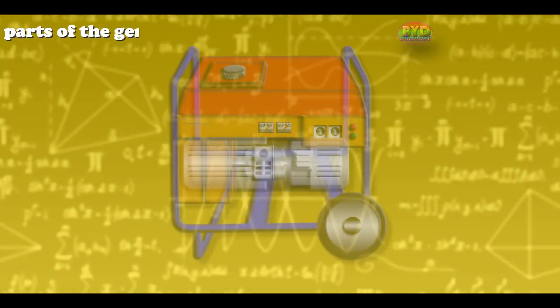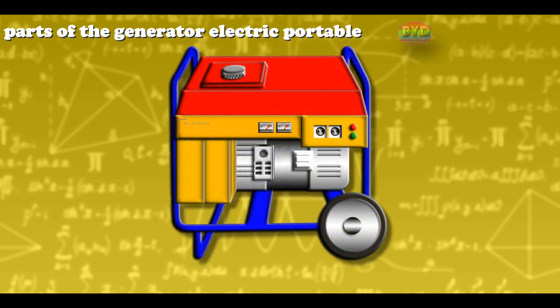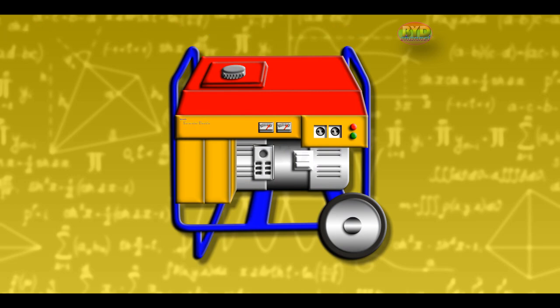Parts of the Generator: Electric portable generators are available in different electrical and physical configurations for use in various applications. The main components of an electric generator can be broadly classified as follows.